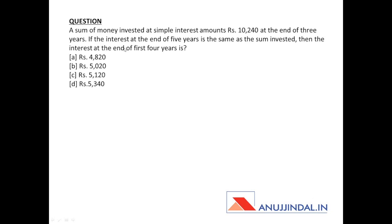The next question: a sum of money invested at simple interest amounts to rupees 10,240 at the end of three years. The principal is not given, only the amount and time are given. Additionally, the interest at the end of five years is the same as the sum invested — meaning if 100 rupees is invested, the interest at five years also equals 100 rupees. We need to find the interest at the end of the first four years.